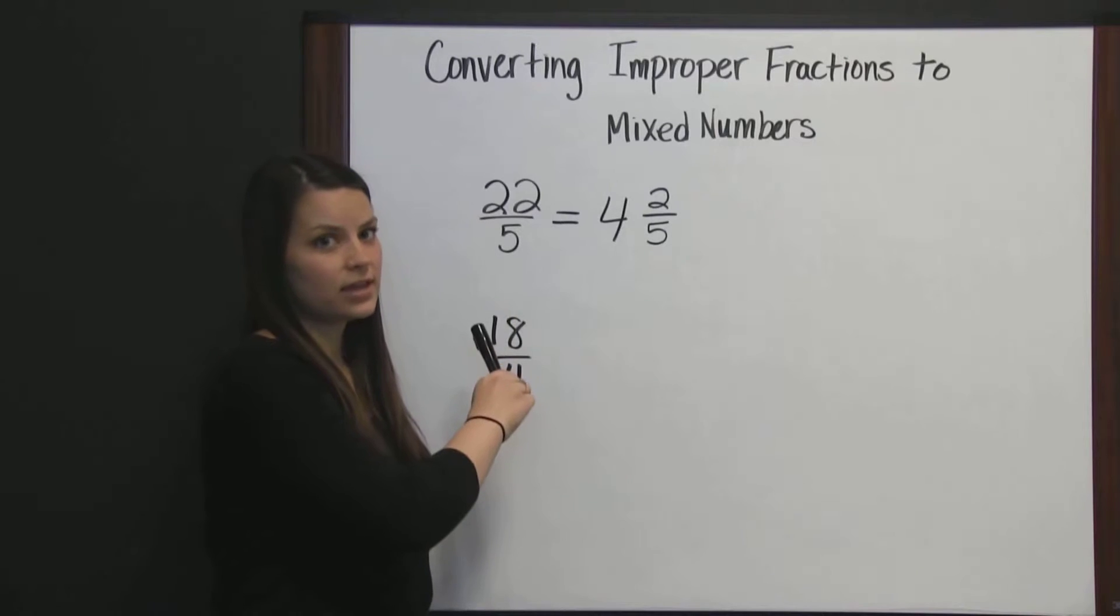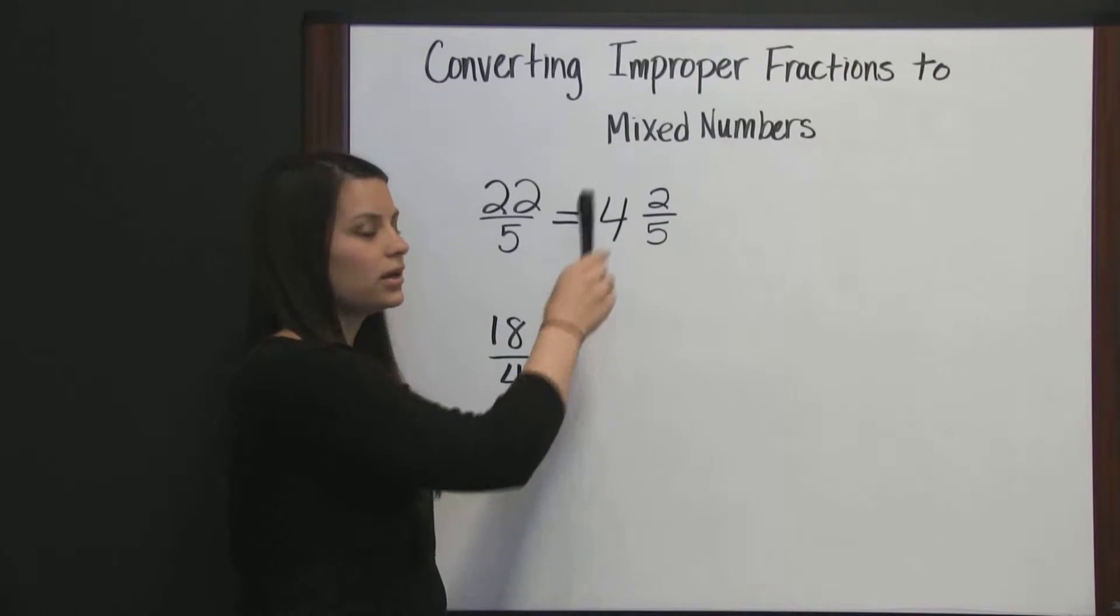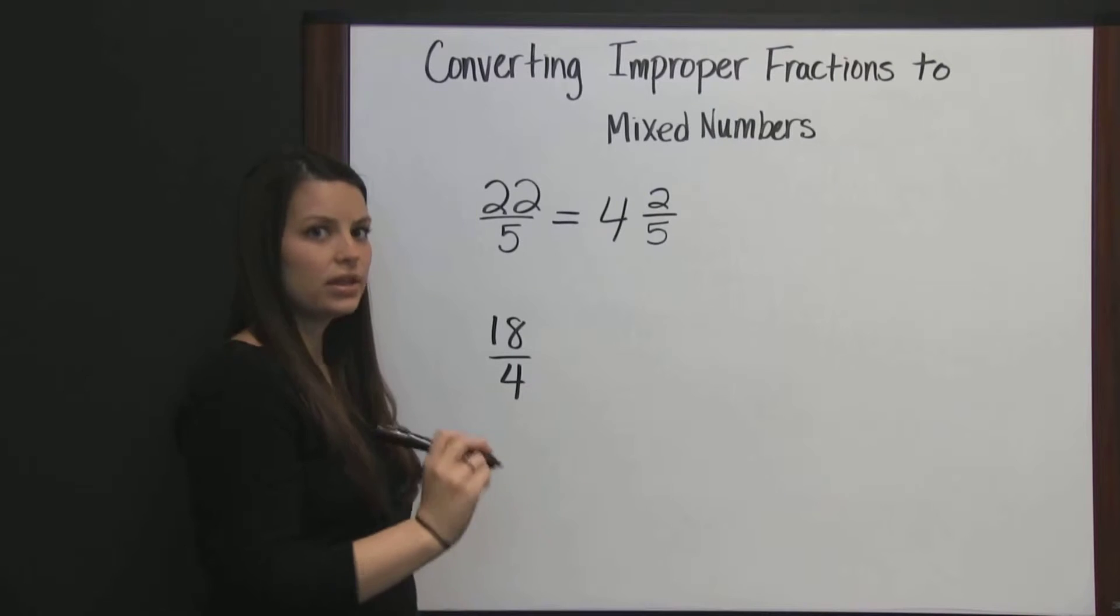Twenty-two-fifths as a mixed number is four and two-fifths. Let's look at one more.